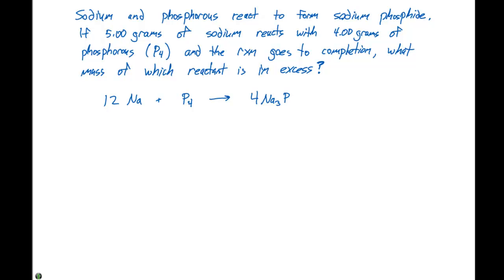We're given the amount of each of the reactants that we have. So now we need to determine the limiting reactant. We'll first start with 5.00 grams of sodium. We know from the periodic table that there are 23.0 grams of sodium in one mole of sodium. In the balanced chemical reaction, there are 12 moles of sodium for every four moles of Na3P. This is going to give us 0.0725 moles of Na3P, which is our product.